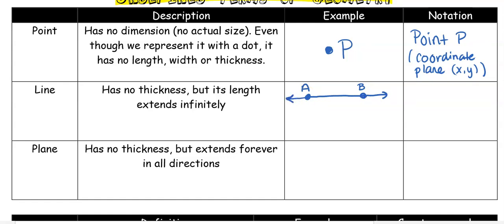When I name a line I'm going to use any two points on the line. If I had four points on it I can use any two of the four — it doesn't matter. What's important is when I write it I give the line notation above, so I need to write a little line with arrows on both sides. If I don't put arrows on both sides I've changed it from a line to something else.